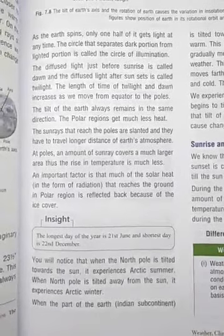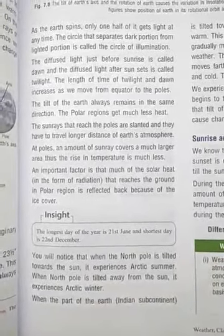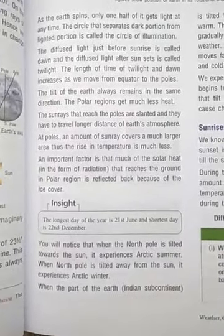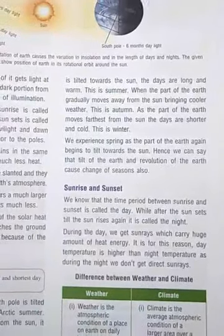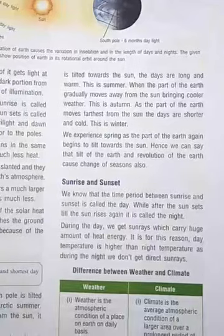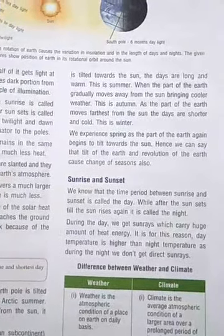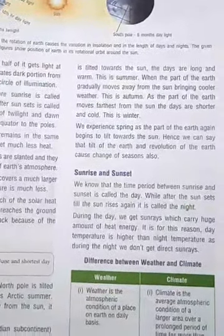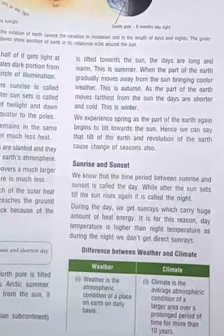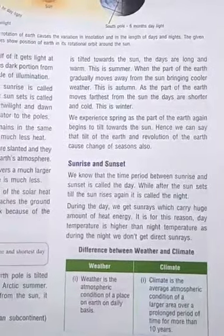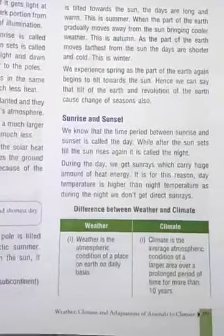The longest day of the year is 21st June and the shortest day is 22nd December. When the North Pole is tilted toward the Sun, it experiences Arctic summer. When it is tilted away, it experiences Arctic winter. When a part of the Earth tilts toward the Sun, the days are long and warm — this is summer. When moving away from the Sun, bringing cooler weather, this is autumn. When farthest from the Sun, days are shorter and cooler — this is winter. When tilting toward the Sun again, it is spring.